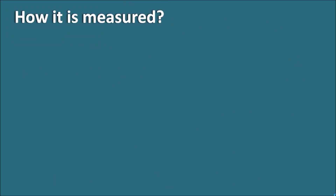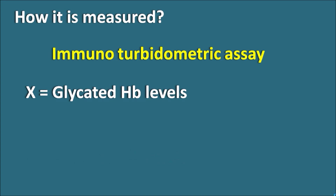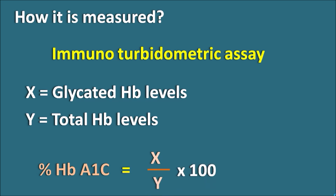How is it measured? The glycated hemoglobin levels can be measured by immunoturbidometric assay. Suppose X is the glycated hemoglobin levels and Y is the total hemoglobin levels, then we can estimate the percentage of hemoglobin A1c as X divided by Y into 100. So HbA1c is expressed as a percentage, where it estimates the number of glycated hemoglobin levels per total number of hemoglobin levels into 100.